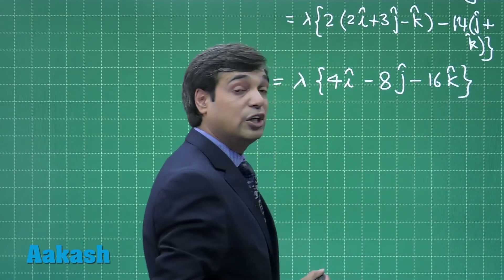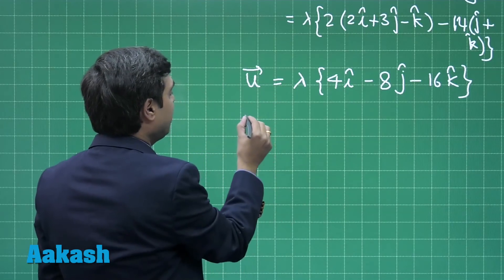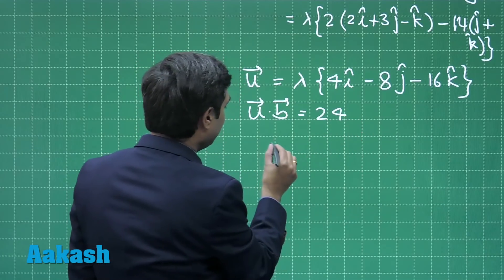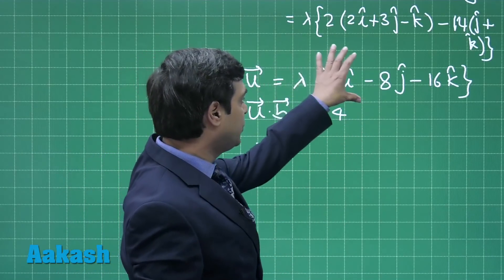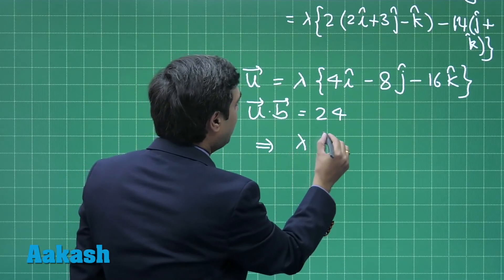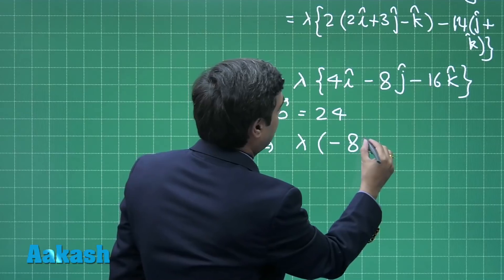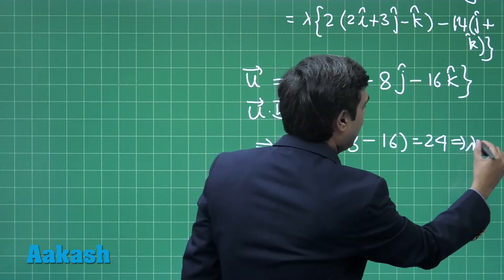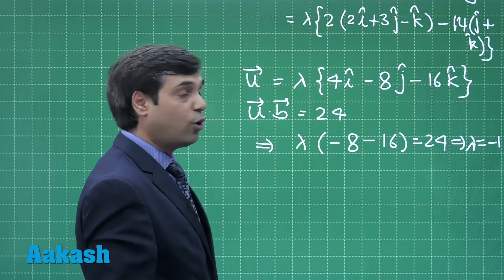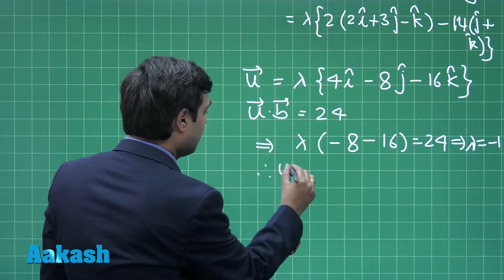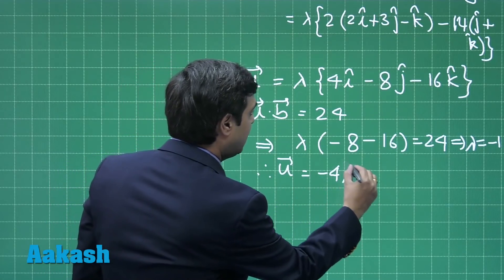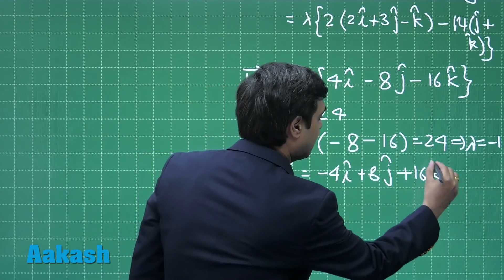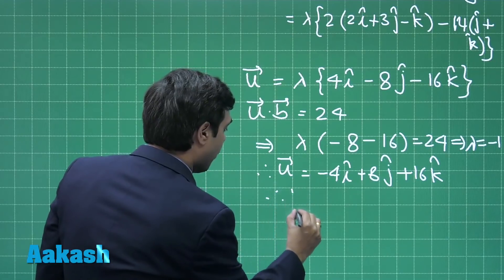This is our u vector. Further, it is given to me u dot b is 24. On substituting this one, we get dot product of u with b vector: lambda times minus 8 minus 16 equals 24, or lambda equals minus 1.